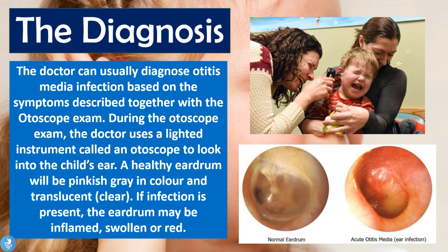Regarding the diagnosis of otitis media — the doctor can usually diagnose an otitis media infection based on the symptoms described together with an otoscope exam. During the otoscope exam, the doctor uses a lighted instrument called an otoscope to look into the child's ear. A healthy eardrum will be pinkish gray in color and translucent, as we can see in this picture. If an infection is present, the eardrum may be severely inflamed, swollen, and red, as we can see here. Based on the signs and symptoms together with the otoscope exam, we will be able to confirm the diagnosis.